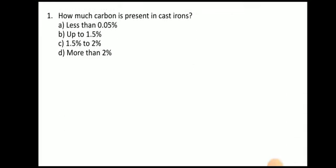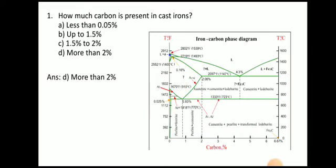Very first question: How much carbon is present in cast iron? The answer is more than 2%. Here you can see the iron-carbon phase diagram. If carbon is present as 0 to 2%, it is known as steel. If the carbon percentage is between 2 to 6.67%, it is known as cast iron.